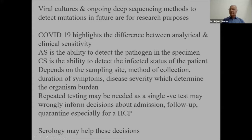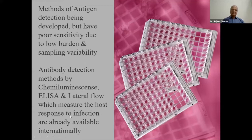Can serology help? Especially when a negative NAT raises the question of whether to release the patient. In serology, antigen detection methods are being developed but have poor sensitivity due to low virus burden and sampling variability. Antibody detection methods — chemiluminescence, ELISA, and lateral flow — measure the host response to infection and are already available internationally, though not yet for routine clinical use in India.